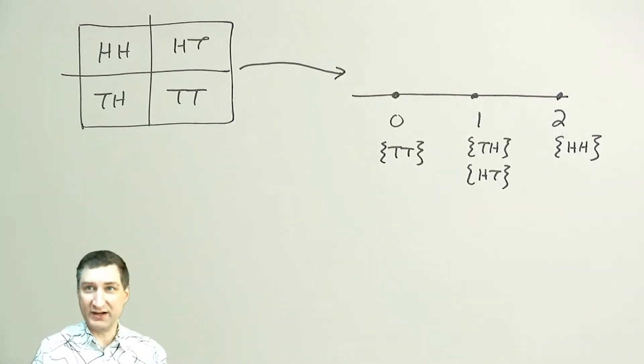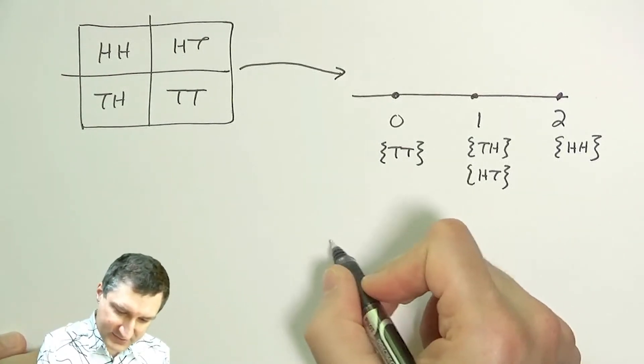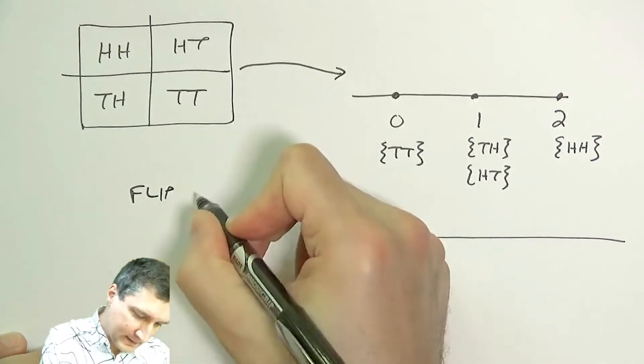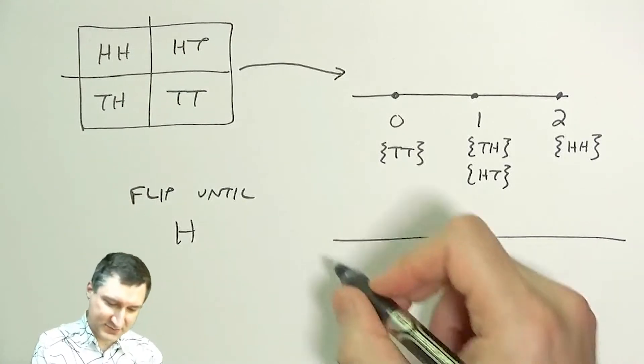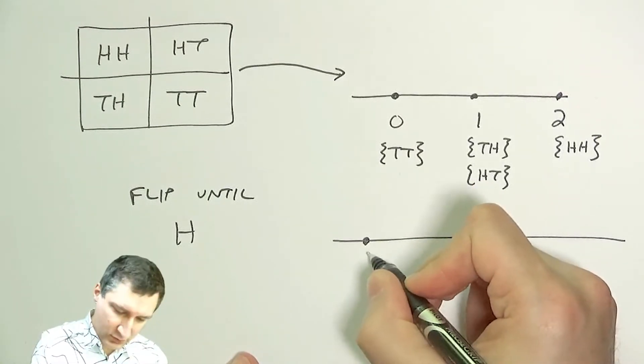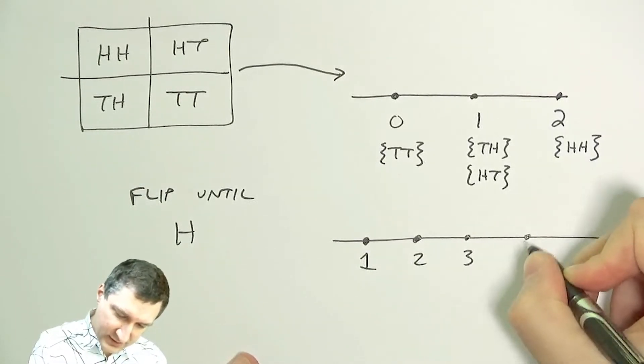Or I could have an infinite number of random variable outcomes. So I could have something like, you know, I keep on flipping until I get a head and I count the number of flips. So I could say, okay, well I have to have at least one flip, and I could have 2 or 3 or 4, all the way out here.